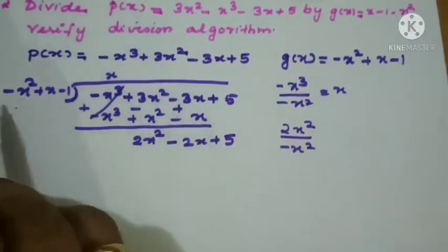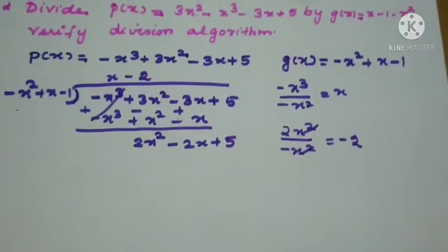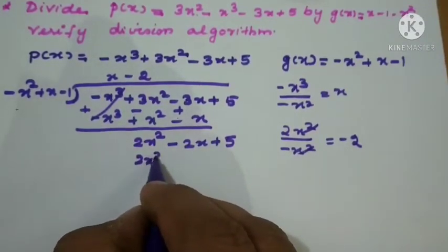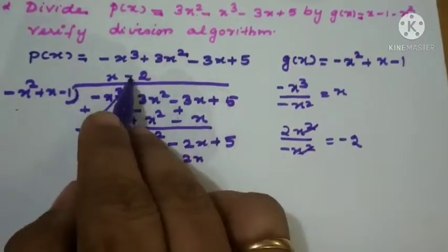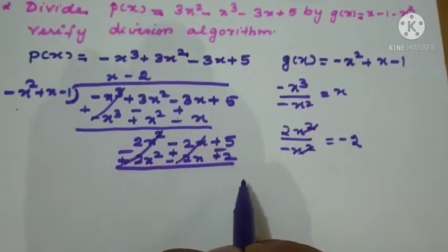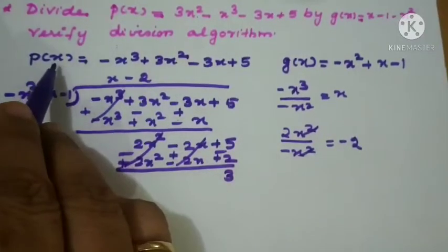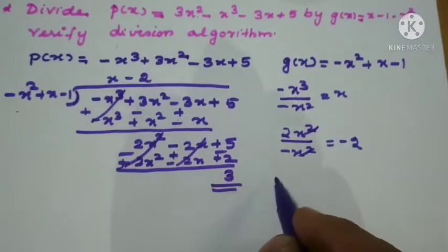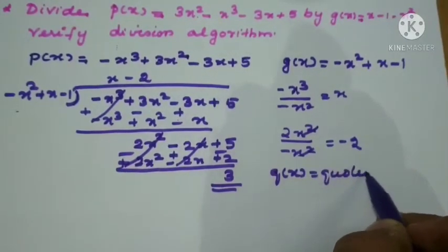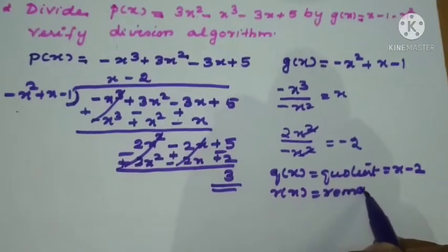After changing signs and subtracting: minus minus becomes plus, giving 3x squared minus x squared equals 2x squared, and minus 3x minus x gives minus 2x. Bring down plus 5. Now 2x squared divided by minus x squared equals minus 2. Multiply minus 2 by each term: minus 2 times minus x squared gives 2x squared, minus 2 times x gives minus 2x, minus 2 times minus 1 gives plus 2. After cancellation, the remainder is 3. So quotient q of x equals x minus 2, remainder r of x equals 3.